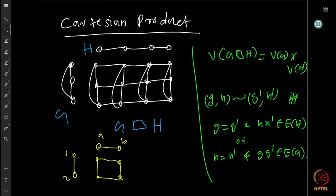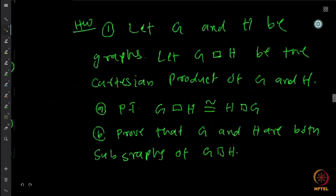Given such a product, we can ask several questions about graph parameters. Here are some basic homework questions. First: given graphs G and H with Cartesian product G box H, prove that G box H is isomorphic to H box G. Second: prove that both G and H are subgraphs of the product graph — we observed this intuitively, but we need a formal proof from the definition.